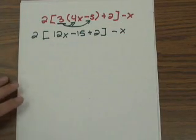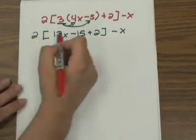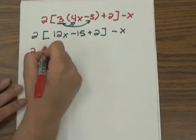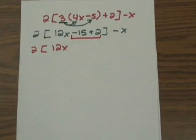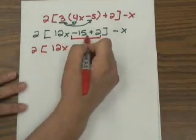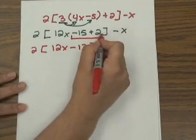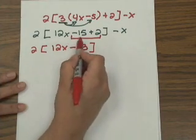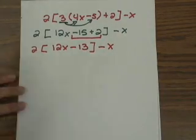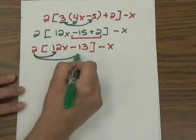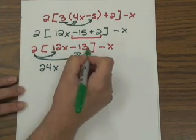Now it comes time to simplify. We have 12x, negative 15, and positive 2. Since 12x has no other x term to combine with, it remains. Combining negative 15 and positive 2: we subtract and take the sign of the higher number, giving negative 13. To get rid of the brackets, distribute the 2 to 12x and negative 13: 2 times 12x gives 24x, and 2 times negative 13 gives negative 26. Bring down the negative x.